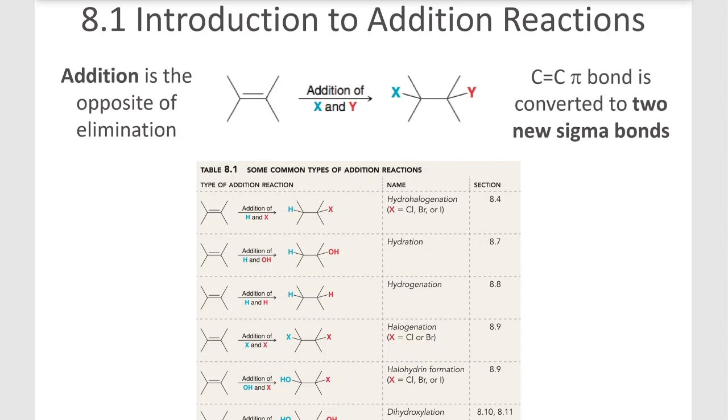So addition is the opposite of elimination as we see here. Elimination is, you'll remember, creating a double bond. And addition is adding something across that double bond. So we're adding something to one side and something else or maybe even the same thing to the other side. So here you can see that we're adding X and Y across a double bond.